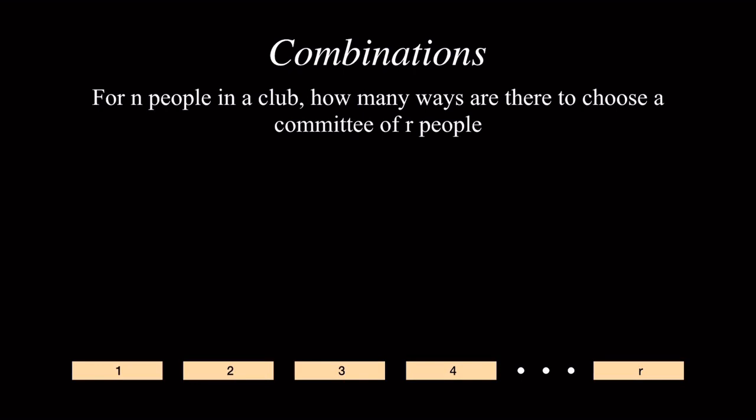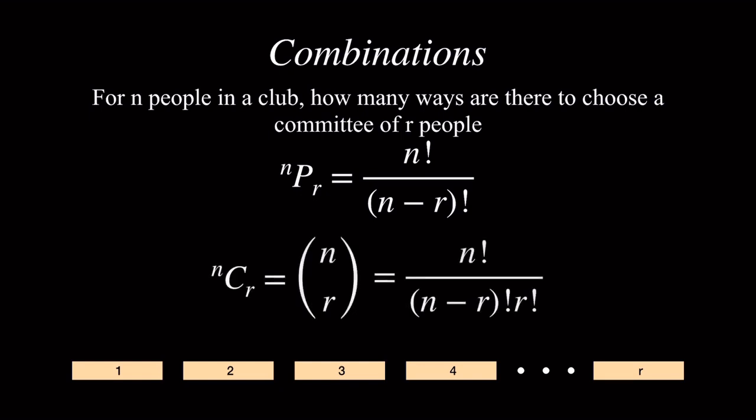In the general case, how many r-person committees can be formed from a group of n people? Well, we first find the number of permutations, which is n factorial over (n-r) factorial, but we must divide by r factorial to get rid of the repeated arrangements. Therefore, we have n factorial over ((n-r) factorial times r factorial), which is denoted as nCr, read as n choose r, or it could also be written as n over r in brackets.